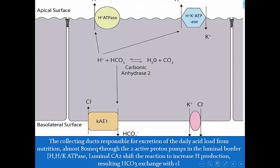In Type 1 RTA, the defect is in the collecting duct, which has an active pump for hydrogen secretion exchanged with potassium. Carbonic anhydrase shifts the reaction to increase hydrogen production and enhance the pump for hydrogen excretion. If there is a defect in this active hydrogen excretion, there is failure of urine acidification, and urine pH is always above 5.3 regardless of bicarbonate level, because this is an active mechanism. The collecting duct is responsible for excretion of the daily acid load of approximately 80 mmol.